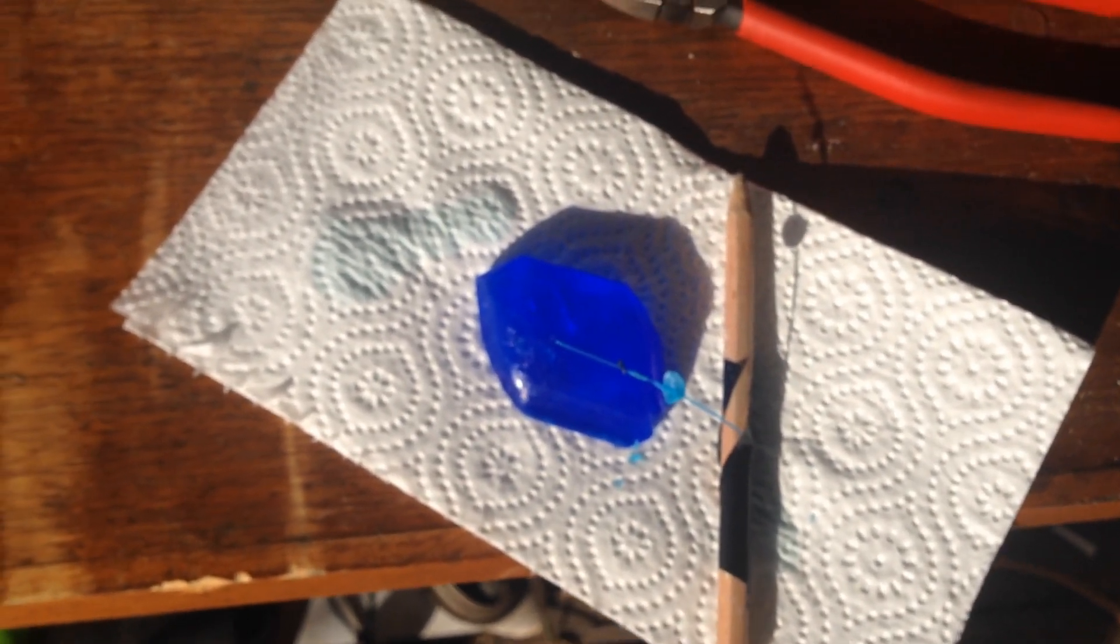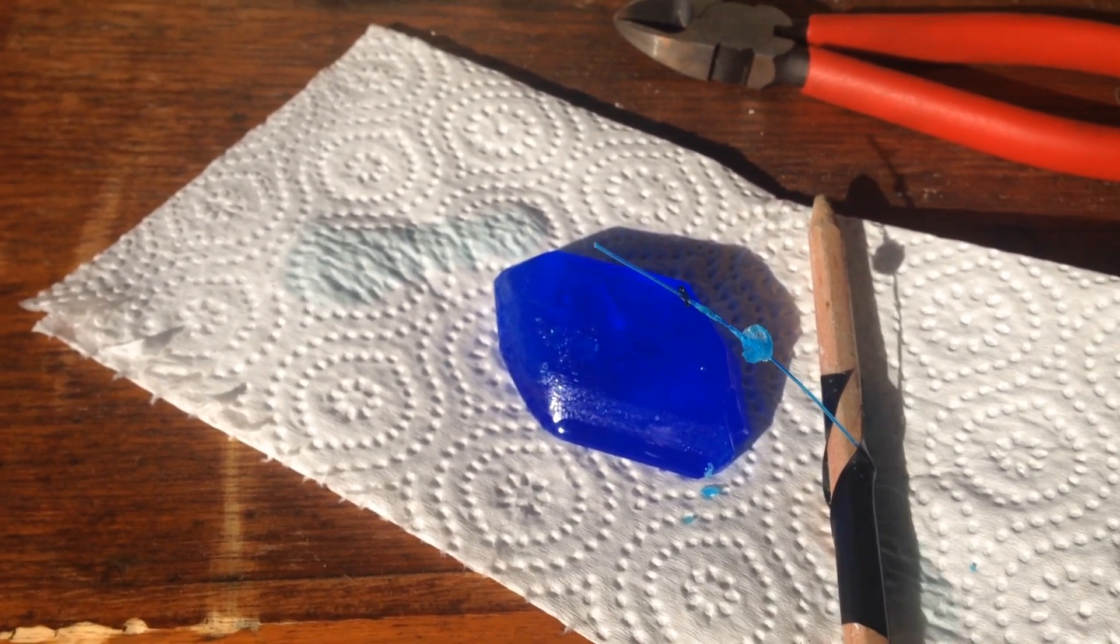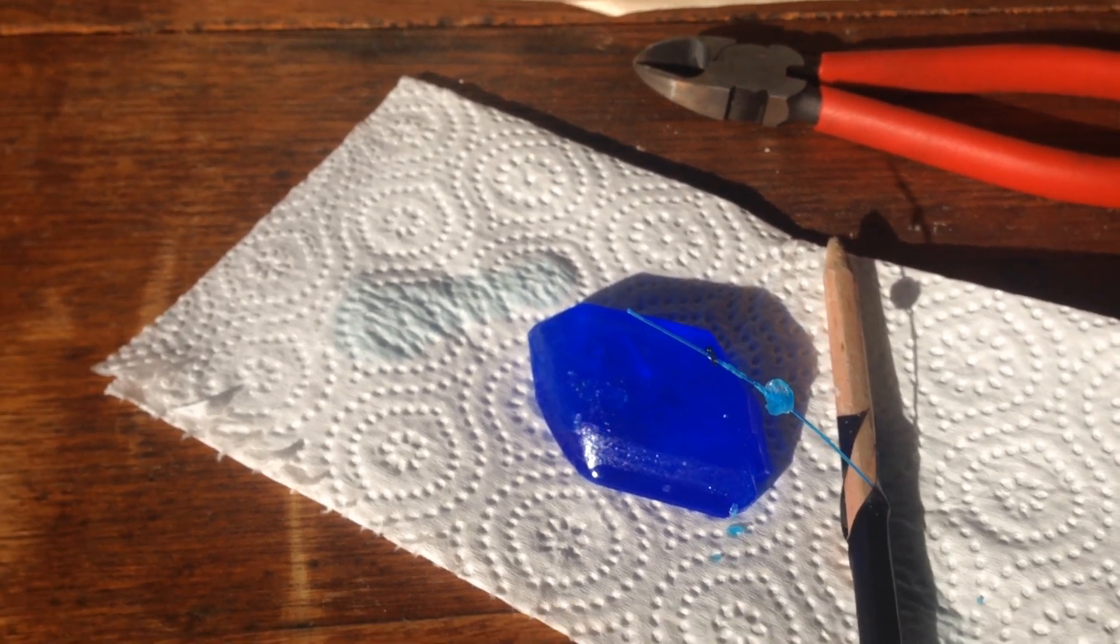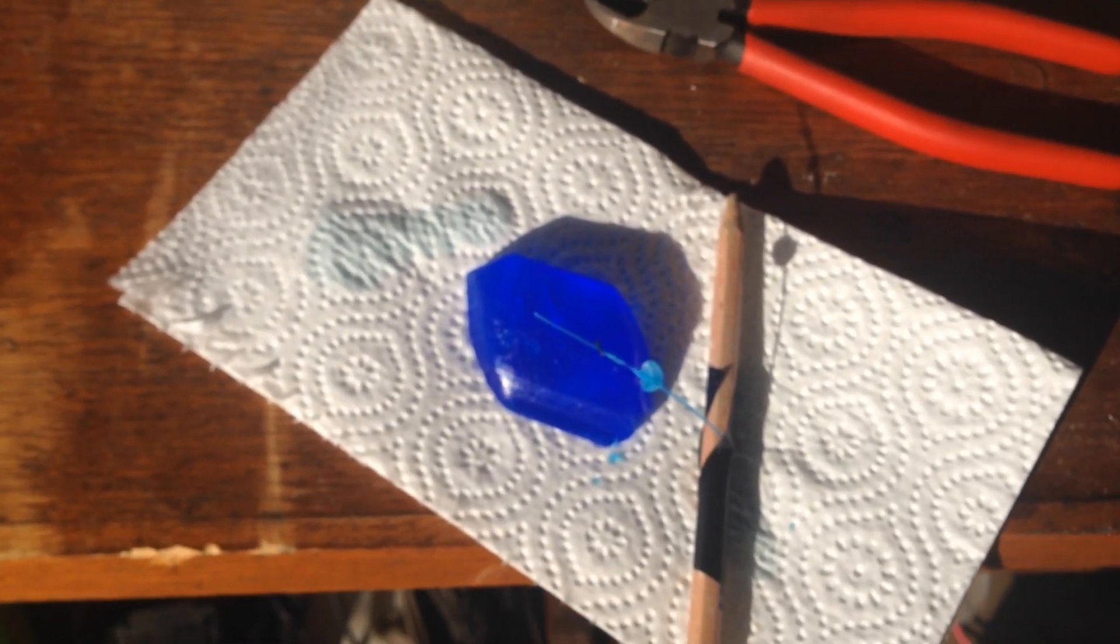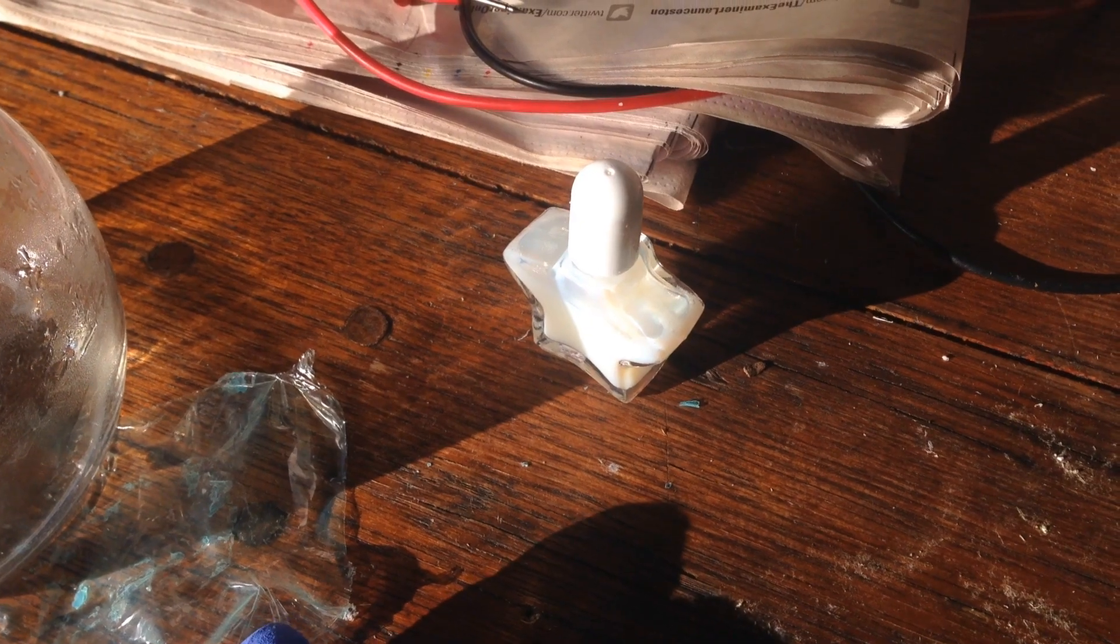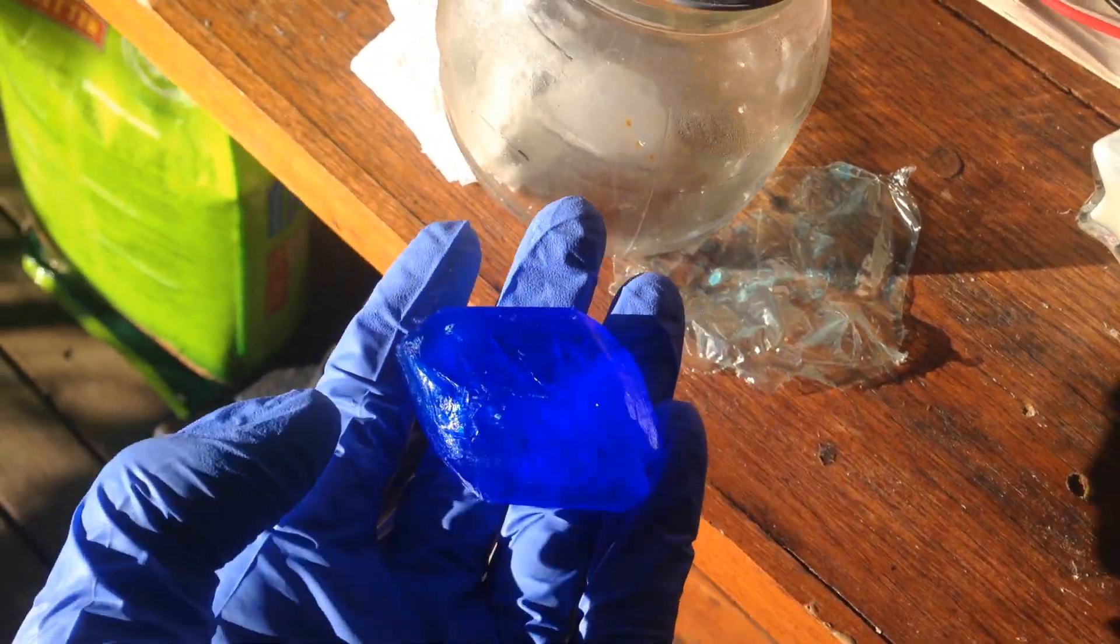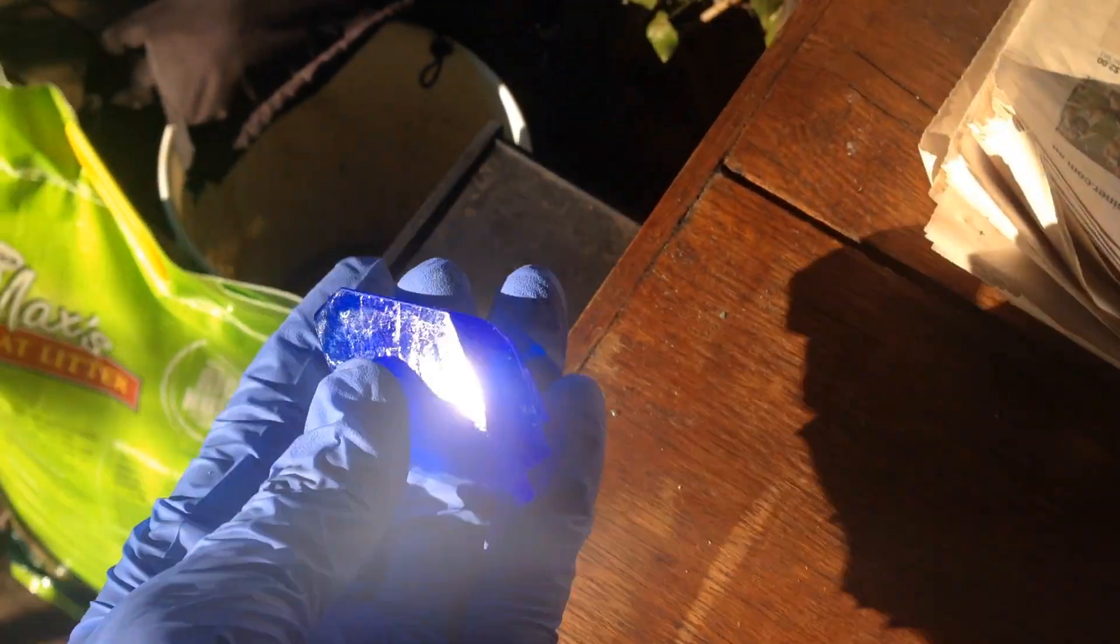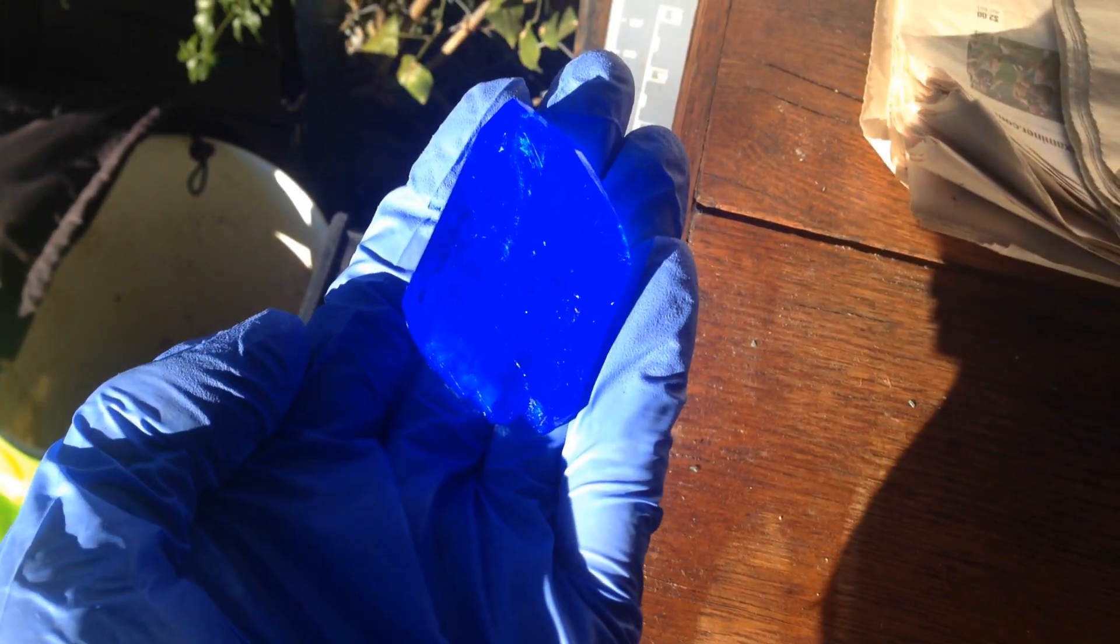And then what I'll do now is just give it a coating of clear nail polish to protect it, make sure it doesn't all turn white, and then I think we're done. The nail polish doesn't seem to want to paint on, so I think I'll just leave it as it is. A nice little copper sulfate crystal. Catch you next time.